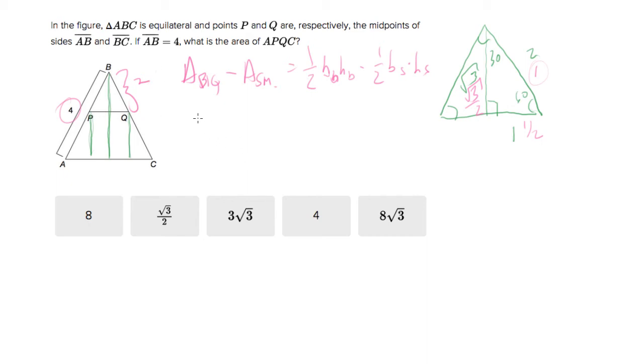All right, so the base of the big one is just the side—it's an equilateral triangle—so that's 4. And the height of the big one, remember, is the side length which is 4 times root 3 over 2. So this is 4 times root 3 over 2. That's the area of the big one.